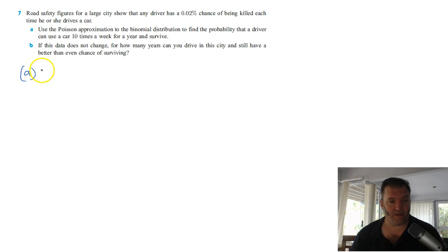So, 10 times a week for 52 weeks, could do 52 and a seventh if you want to be a real smarty pants, but we'll only be expecting you to do 52 weeks. That'll be 520 times that they're using it with a probability of 0.02. So what's my expected number? 520 multiplied by 0.02%, so that's 0.02 out of 100.